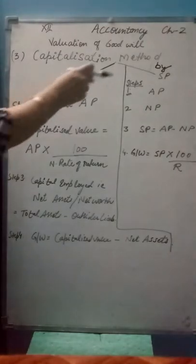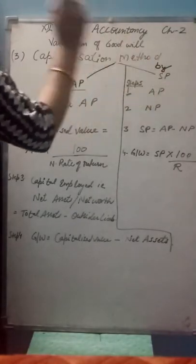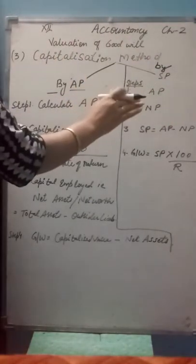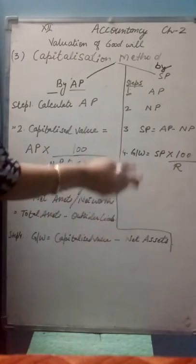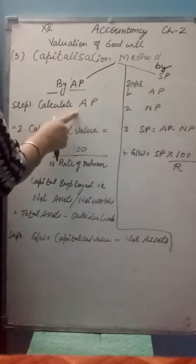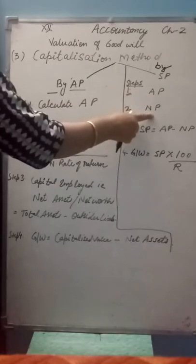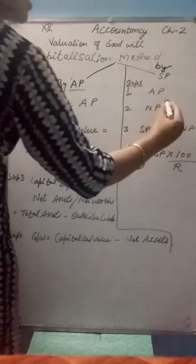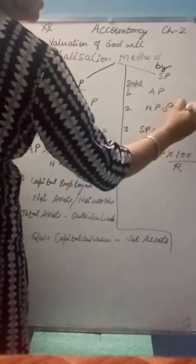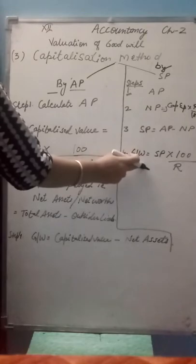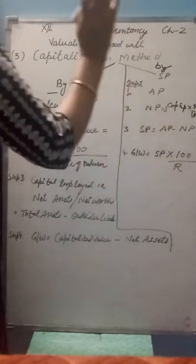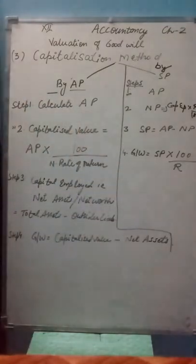One more method: Capitalization Method through Super Profit. Under this method, first calculate the super profit. Normal profit equals capital employed into rate upon 100. Then SP equals AP minus NP. Goodwill equals SP into 100 upon rate.